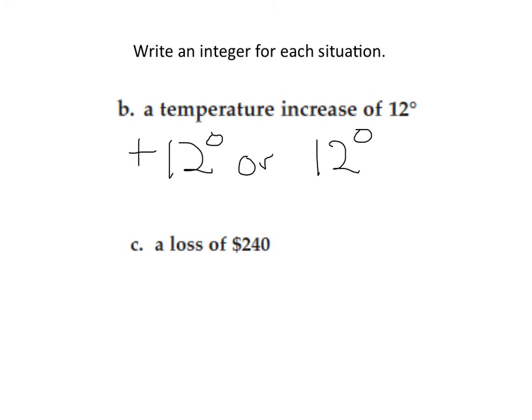In problem C, we have a loss of $240. A loss is subtraction in translating, but in integers we're going to use that as a negative, so that's negative $240. The negative sign in front says to us that we've lost $240.